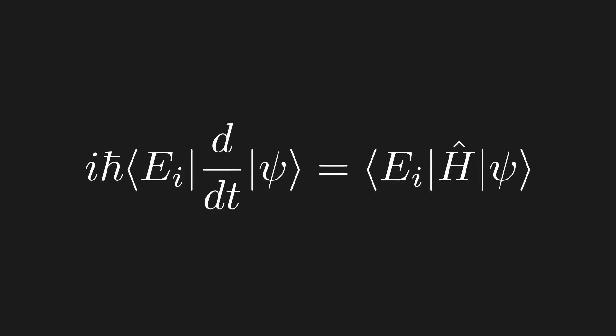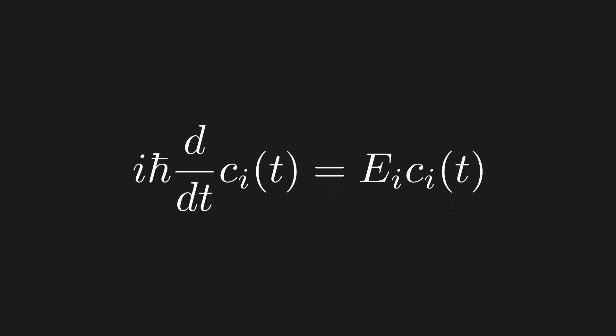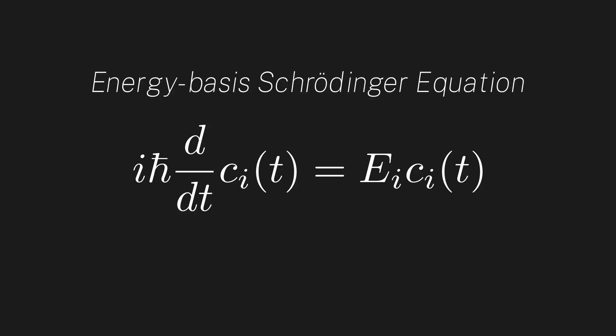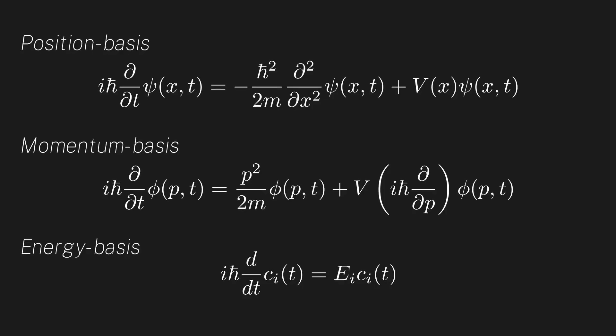We can also write the energy-basis Schrödinger equation, where c_i is the basis coefficient corresponding to the i-th energy eigenstate, assuming a time-independent Hamiltonian. Here are the different basis representations of the Schrödinger equation. Most textbooks just throw the position-basis form at you and call it a day. I want to stress that these all represent the same equation — each one tells you how the coefficients in a particular basis evolve in time, and no one equation carries any more information than the others.